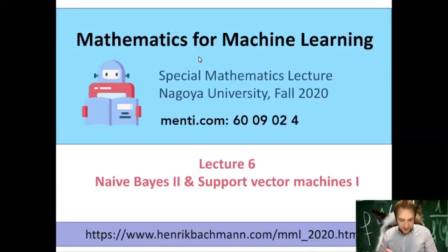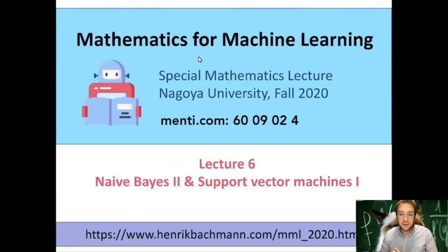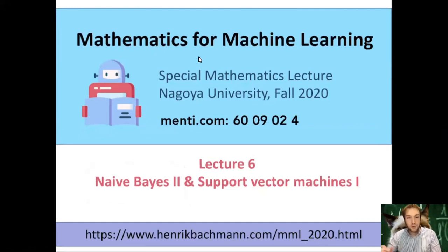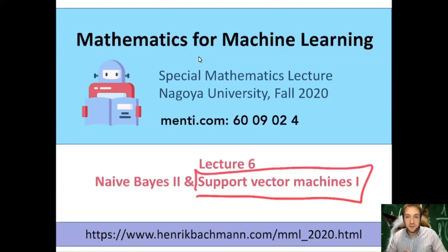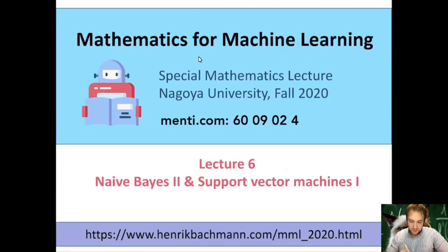Welcome to lecture number six. Today I will recall the naive Bayes classifier we discussed last time, where we had an email spam filter as an example. Homework two will be to implement a simple version of this email spam filter. There's one thing I didn't mention last time, called Laplace smoothing, which will help improve the classifier. After this, I will start talking about support vector machines, for which I will prepare some math you should know.